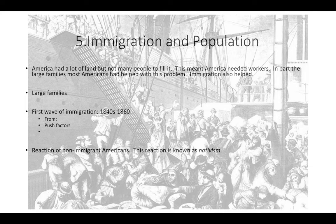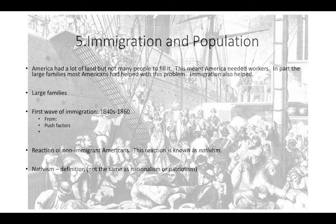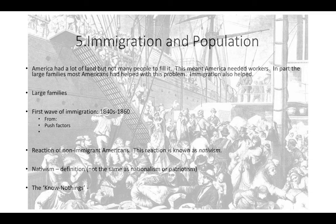The reaction of non-immigrant Americans was not good — this was probably the nastiest period of anti-immigrant sentiment. That reaction is known as nativism: favoring people born here over citizens who came from another place. That's different from patriotism or nationalism. As an example, people organized political parties — there was one called the American Party, specifically designed to stop immigration. They're called the Know-Nothings because if anyone asked what they were up to, they'd say 'I know nothing.' They had some power in the 1850s but didn't accomplish very much.